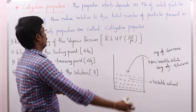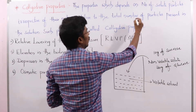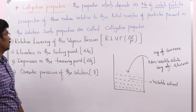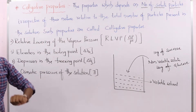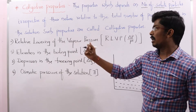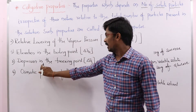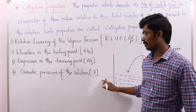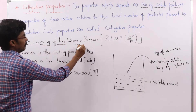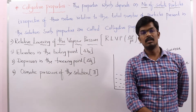There are some properties which depend on the number of solute particles, irrespective of their nature. Those types of properties we call Colligative Properties. The properties which depend on the number of solute particles relative to the total number of particles present in the solution are called colligative properties. Majorly we have 4 different types: relative lowering of vapor pressure of solvent, elevation in boiling point of solvent, depression in freezing point, and osmotic pressure of the solution. In this section, I am going to explain relative lowering of vapor pressure and how we calculate the molar mass of solute present in the solution.